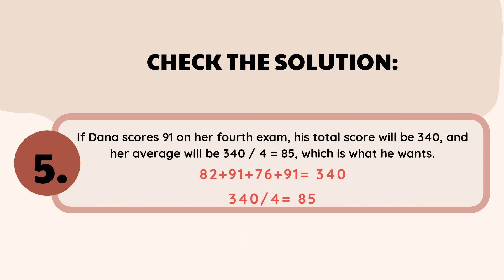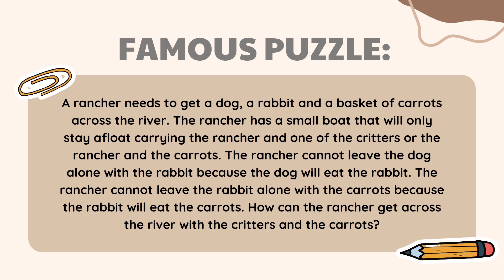We are now going to proceed to the next question: the famous puzzle. A rancher needs to get a dog, a rabbit, and a basket of carrots across the river. The rancher has a small boat that will only stay afloat carrying the rancher and one item. The rancher cannot leave the dog alone with the rabbit, and cannot leave the rabbit alone with the carrots because the rabbit will eat them.